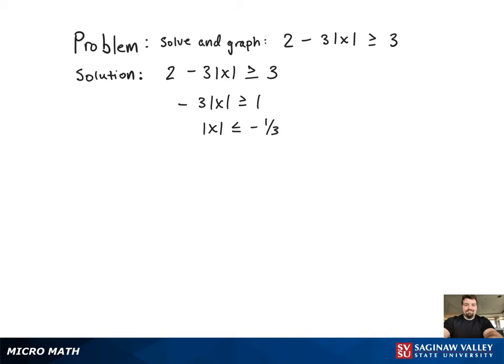Now the only issue is you get absolute value of x less than a negative number. That's a no solution. As you can see, absolute value of x has to be greater than or equal to zero.